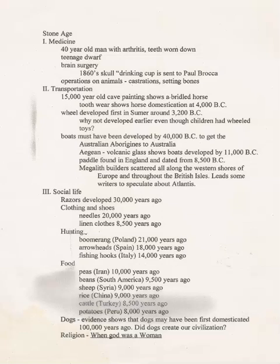The Stone Age lasts for millions of years, three million-plus years into the past. It only ends when humans begin to use metals as their primary tools, which means bronze. The Bronze Age begins about 3000 BC.